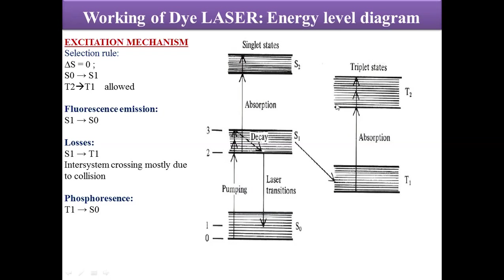This is the energy level diagram. The ground state is denoted as S0. The first excited singlet state is S1, the second excited singlet state is S2. Then we have the first excited triplet state and the second excited triplet state. Now, what are these singlet and triplet states?